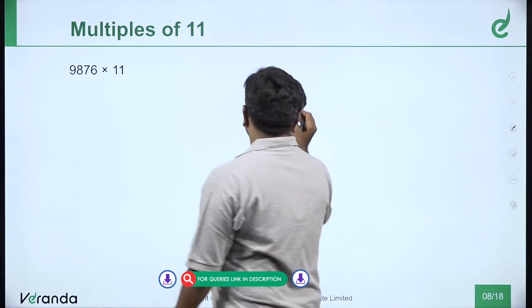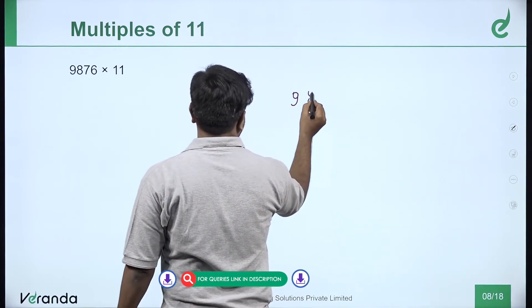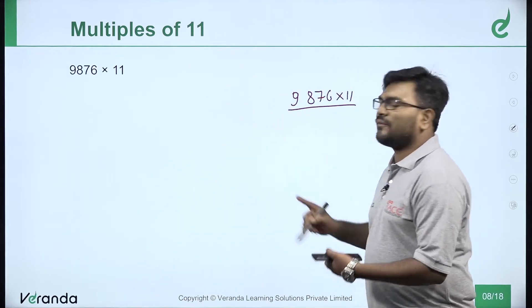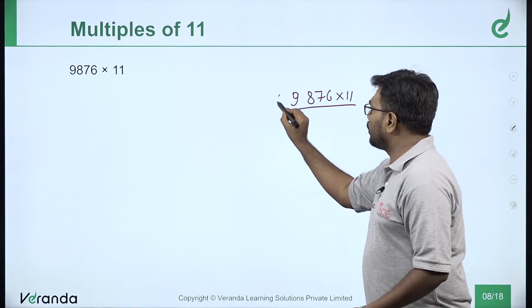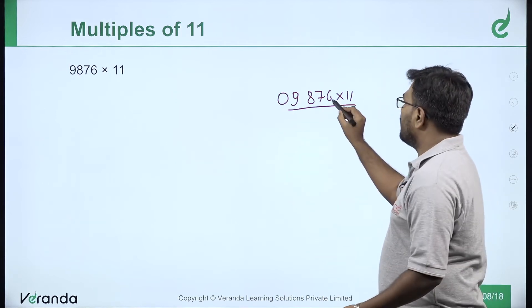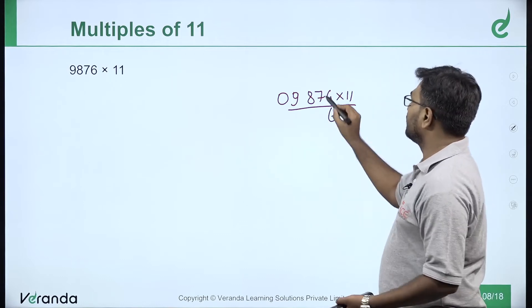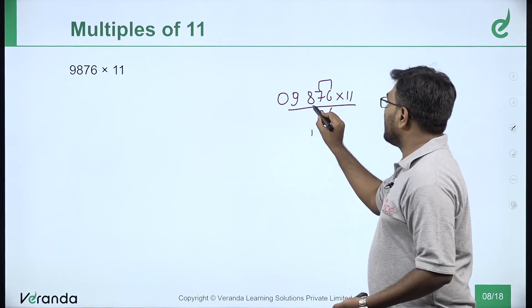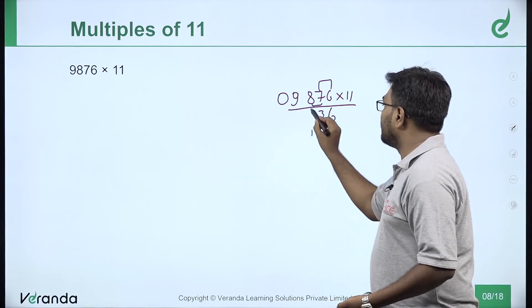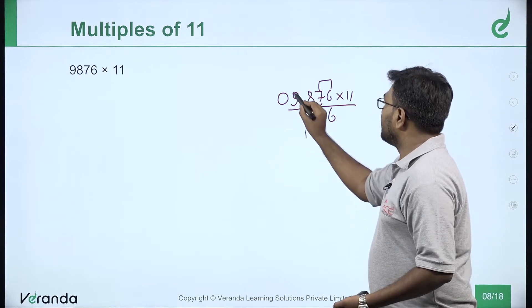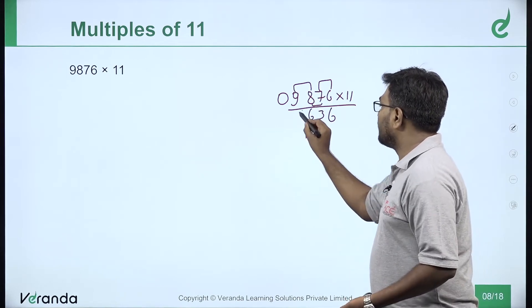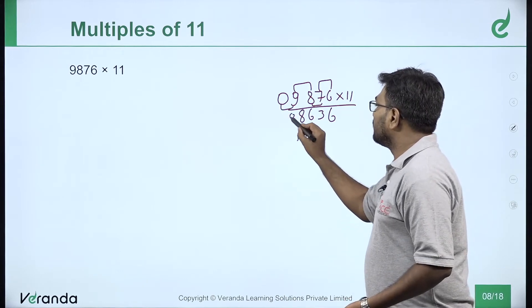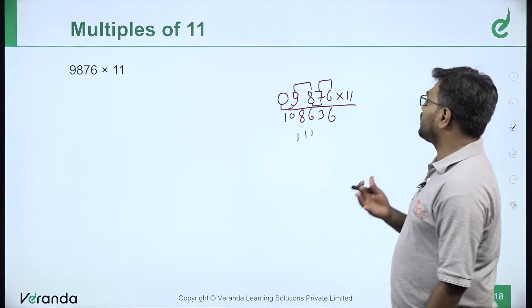One more example: 9876 into 11. Add a 0. First digit stays as 6. Then 7 plus 6 is 13 — write 3, carry 1. Then 8 plus 7 is 15, plus 1 is 16 — carry 1. Then 9 plus 8 is 17, plus 1 is 18 — carry 1. Then 0 plus 9 is 9, plus 1 is 10. Your answer will be 108636.